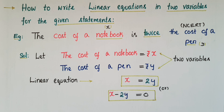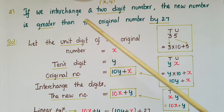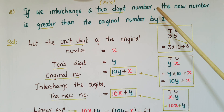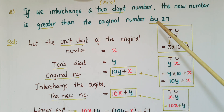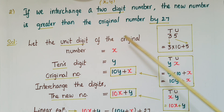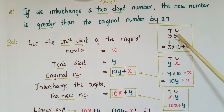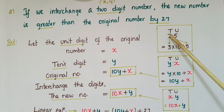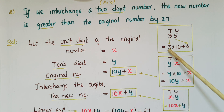If the given statement is: when we interchange a two-digit number, the new number is greater than the original number by 27. Let the unit digit of the original number be x and the tens digit be y. For example, take the number 35 — here 5 is the unit digit and 3 is the tens digit. This number can be written as 3 times 10 plus 5.